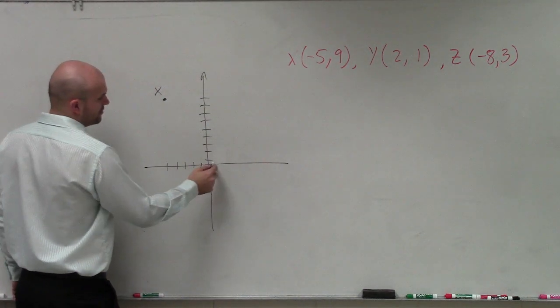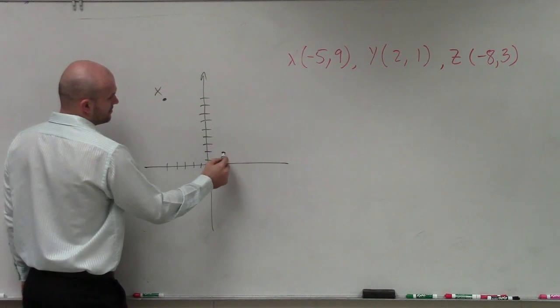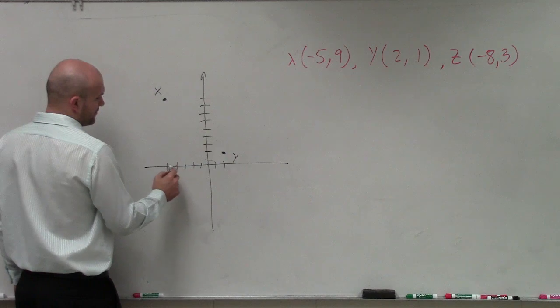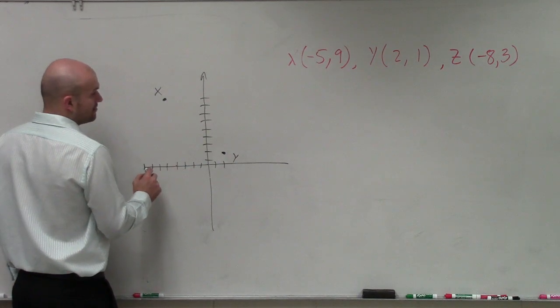Then I have Y, which is 2, 1, up 1. And then I have Z, which is negative 8: 1, 2, 3, 4, 5, 6, 7, 8, positive 3.